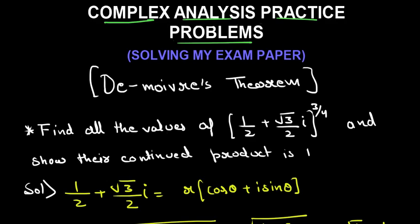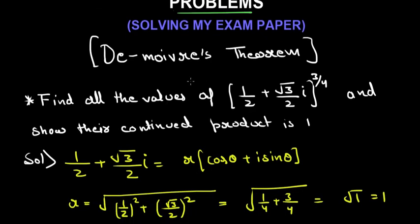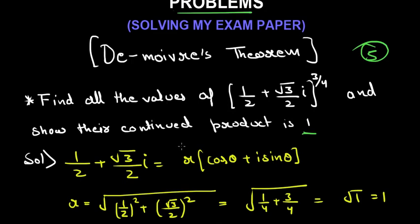The first question on De Moivre's theorem came for five marks. The question was to find all the values of a given expression and then show that their continued product is one. To solve this we will use De Moivre's theorem.